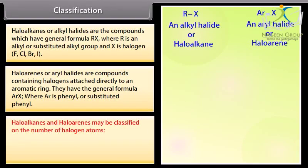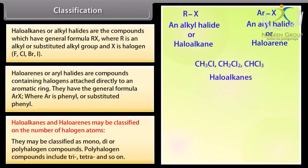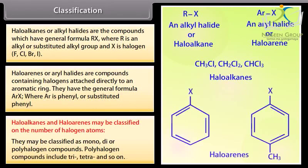Haloalkanes and haloarenes may be classified on the number of halogen atoms. They may be classified as mono, di, or polyhalogen compounds. Polyhalogen compounds include tri, tetra, and so on.